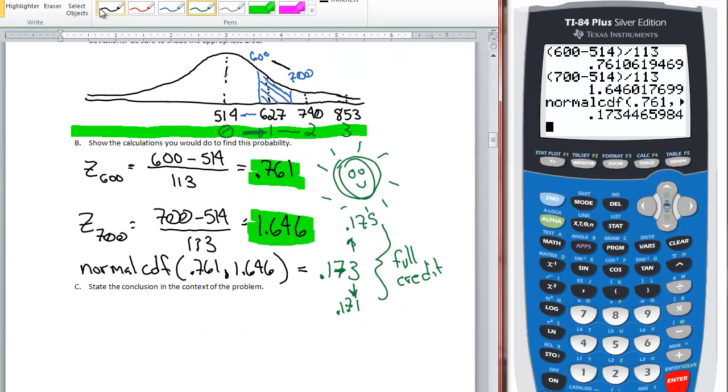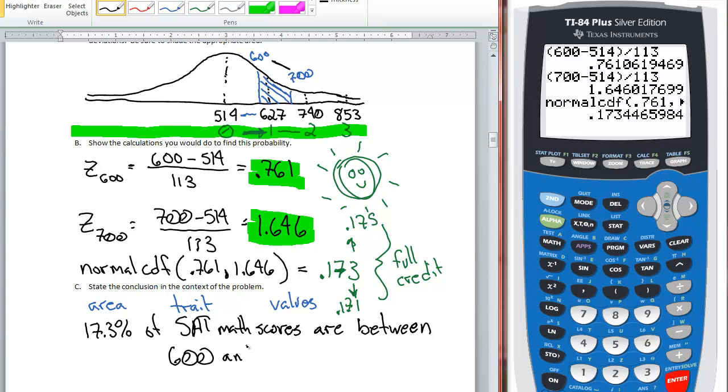And then last but certainly not least, we need to state the conclusion of the problem in context. And remember here, we needed the area. We need the trait. And then we need the values that we were interested in. So I'm going to write this as 17.3% of SAT math scores are between 600 and 700.